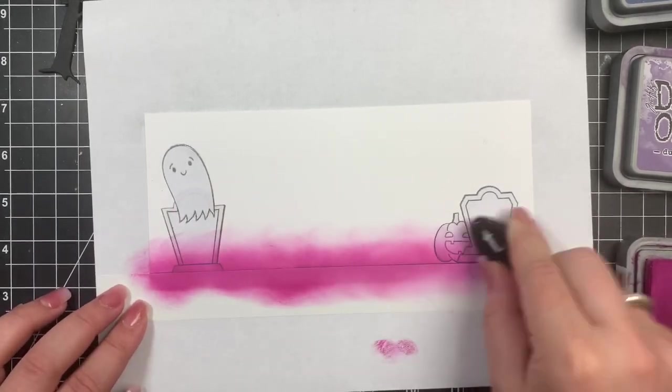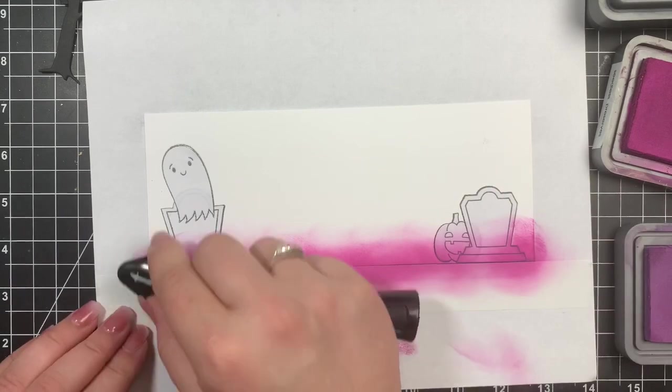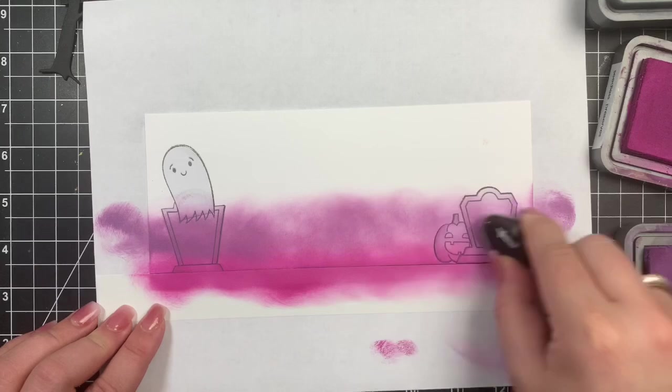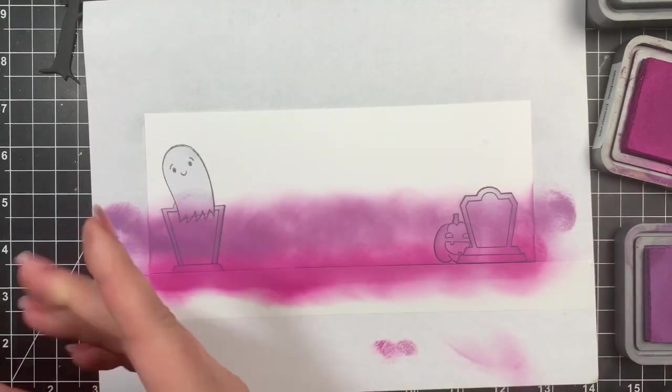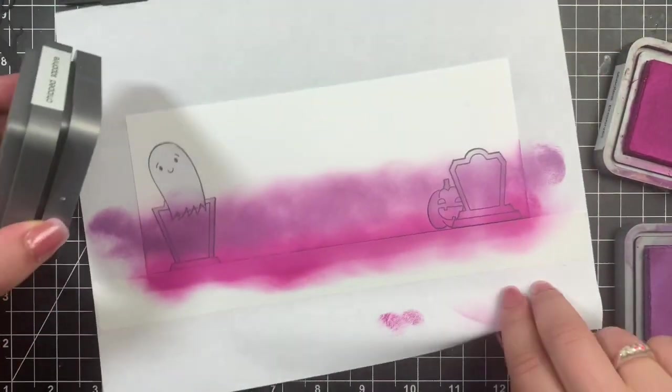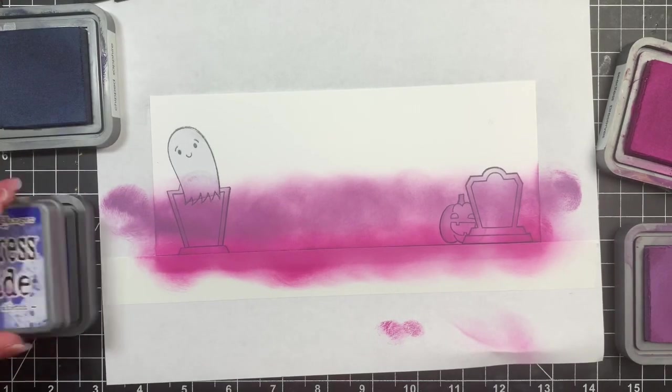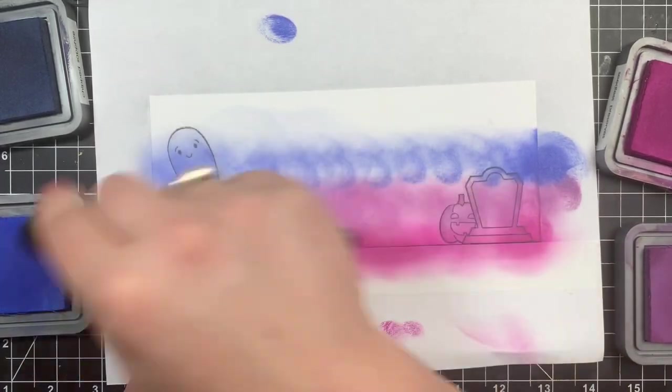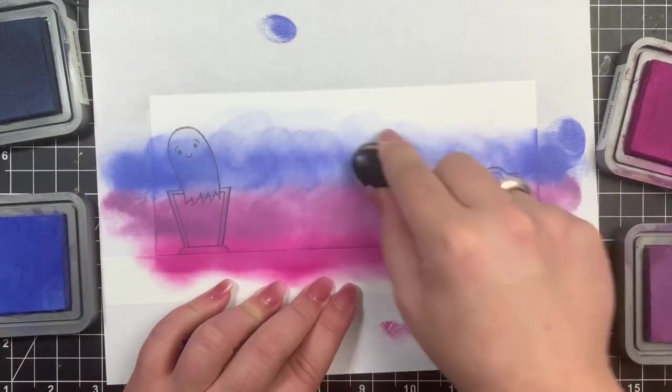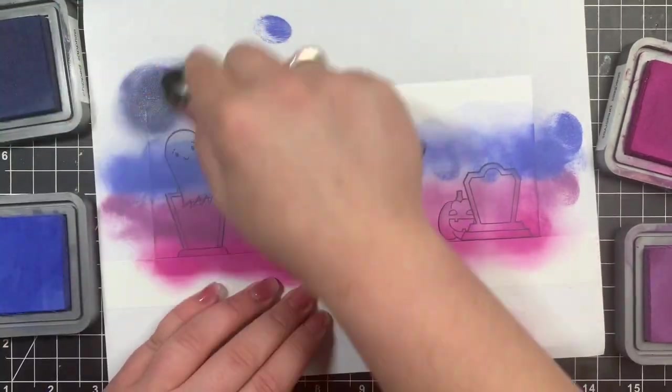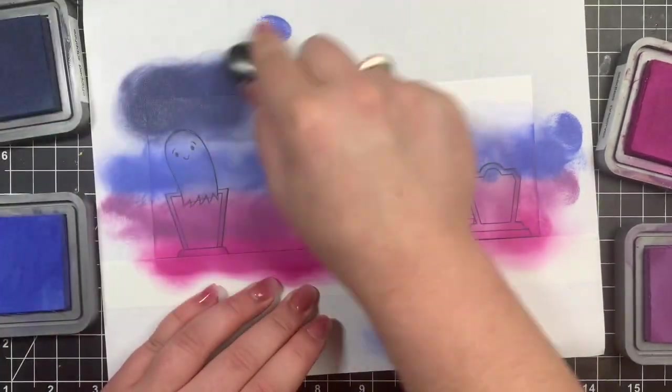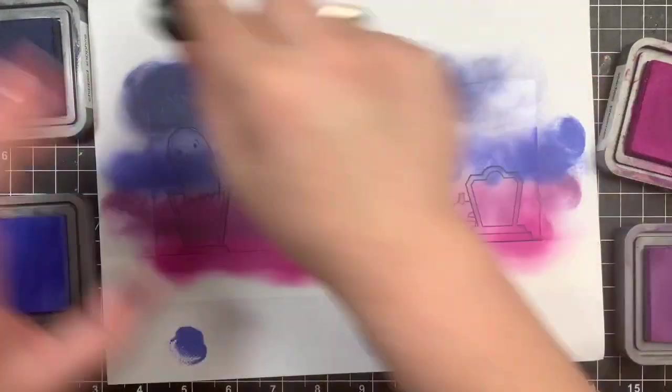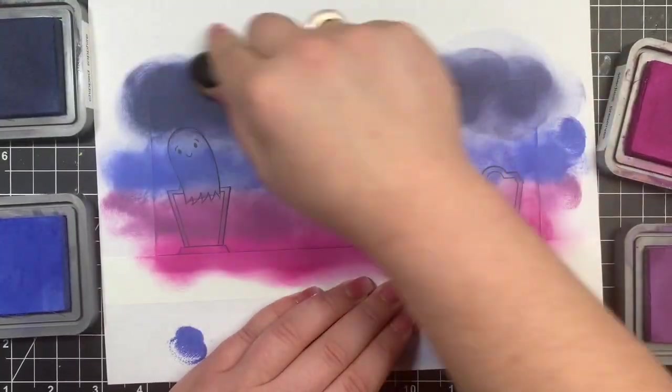So I'm going to be using four different colors. I switched over to distress oxides this time and I am starting off at the bottom with the seedless preserves and I'm working my way up to the chipped sapphire. Now if you guys have ever watched my videos before, you'll know that when I do my ink blending, I go over it twice. The first time around, I pretty much just lay down the color. As you can see, it's very blotchy. I'm not worried about the colors blending. I'm just kind of getting my color on there. Now once I reach the top of the card panel, then I can start working my way back down and actually making sure that my colors blend.